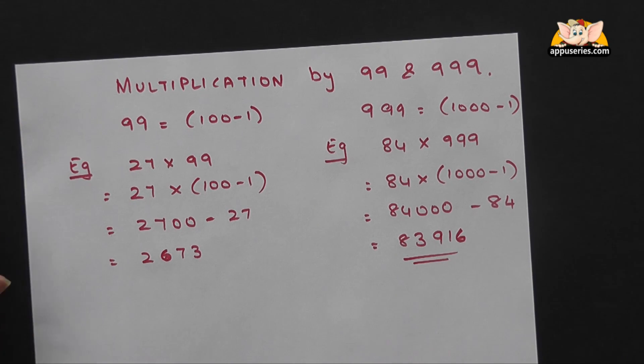I bet you can't get a faster method to multiply by 9, 99, and 999. Good night.